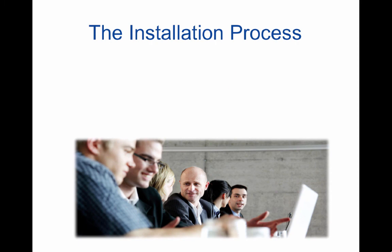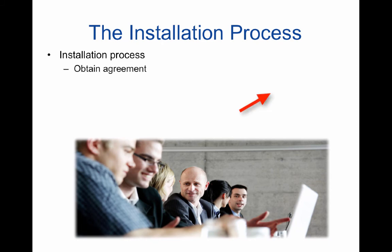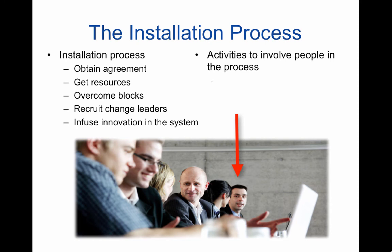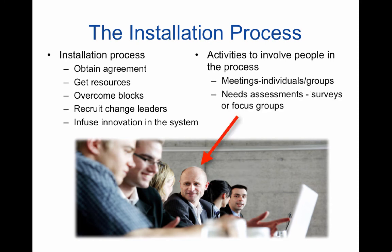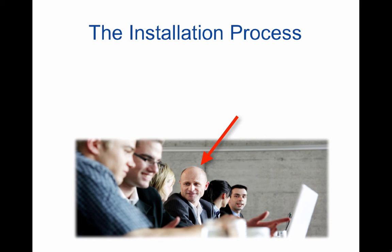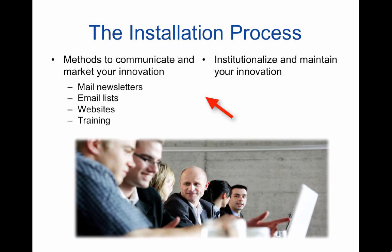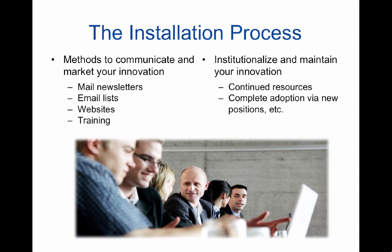Once you've decided on an innovation, how do you get it installed? The installation process means you have to obtain agreement from the stakeholders, make sure you have enough resources, and overcome the blocks to change. You also need to recruit change leaders into the process and infuse the innovation into the system. Activities to involve people might include meetings with individuals and groups, needs assessments, surveys or focus groups, and work groups. Methods to communicate and market your innovation include newsletters, email lists, websites, or training. To institutionalize and maintain your innovation, make sure you have continued resources, new positions to keep the innovation in place, and a system for updates and upgrades.